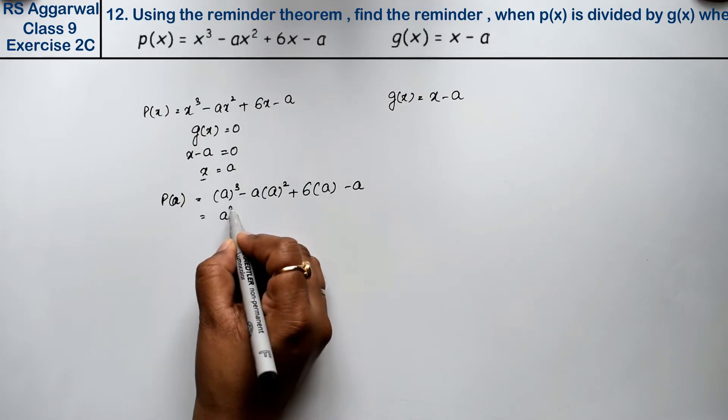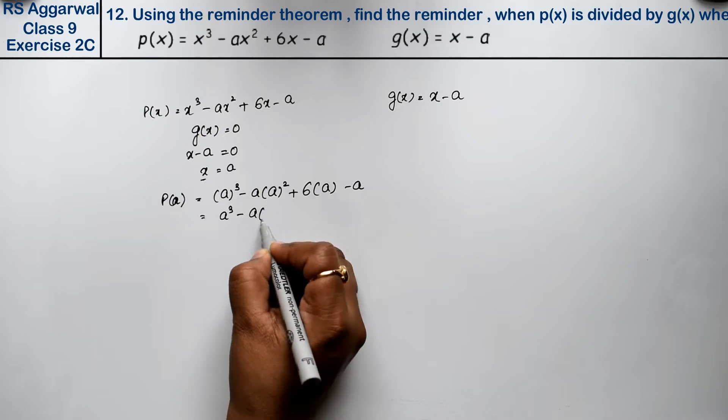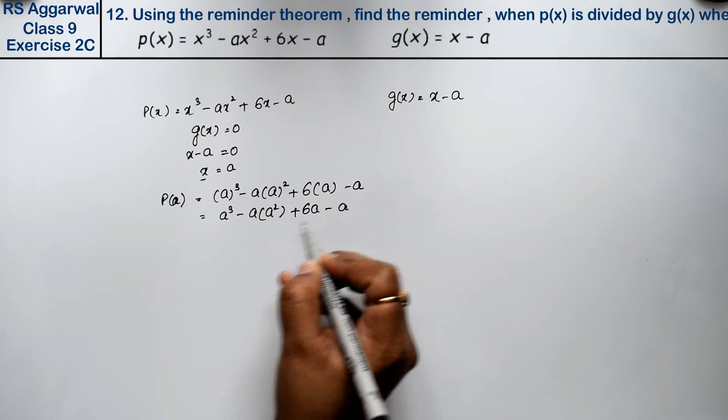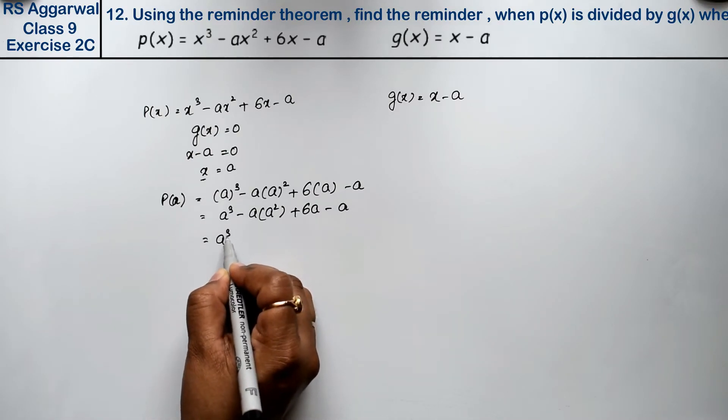So a cube is a cube minus a into a square plus 6a minus a. So how much is it? So a cube minus a.